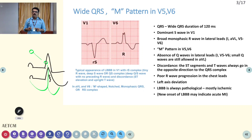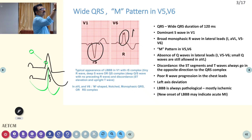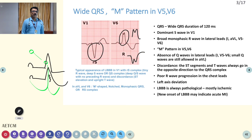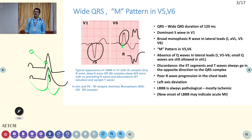There is a dominant S wave in V1 — the S wave is very prominent. Then there is an M pattern in V5 and V6. Most of the time it is an M pattern — upright or positive wave — but sometimes it can be negative, giving a W pattern. Also, there is absence of Q waves in the lateral leads; normally a small Q wave would be there, but in LBBB it is absent.